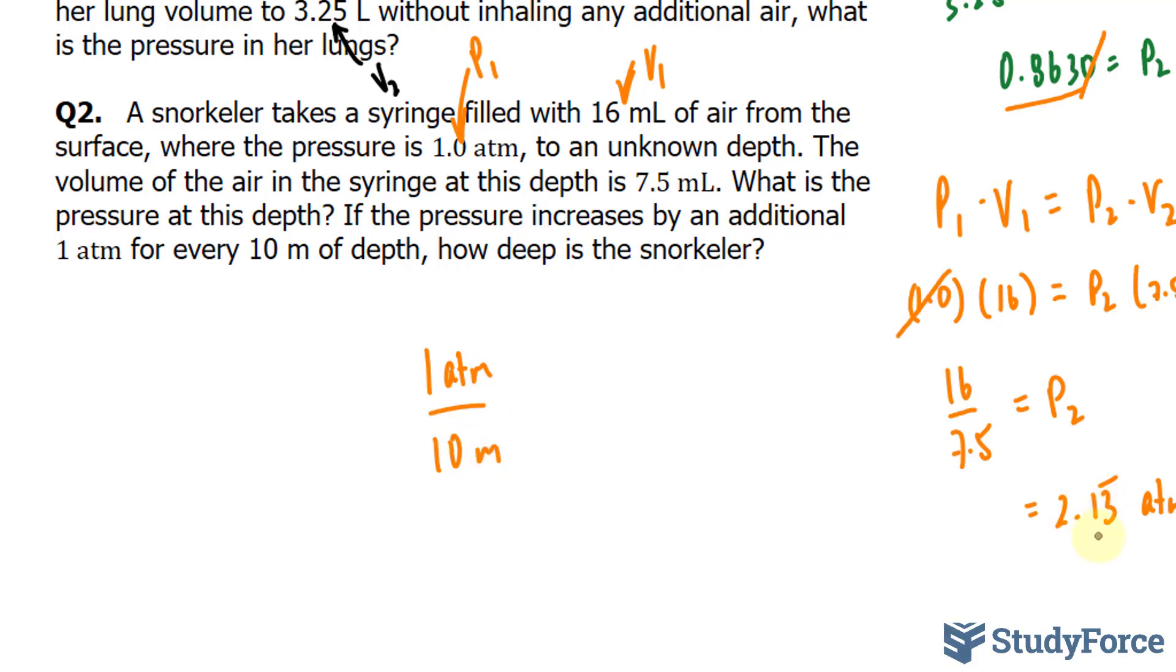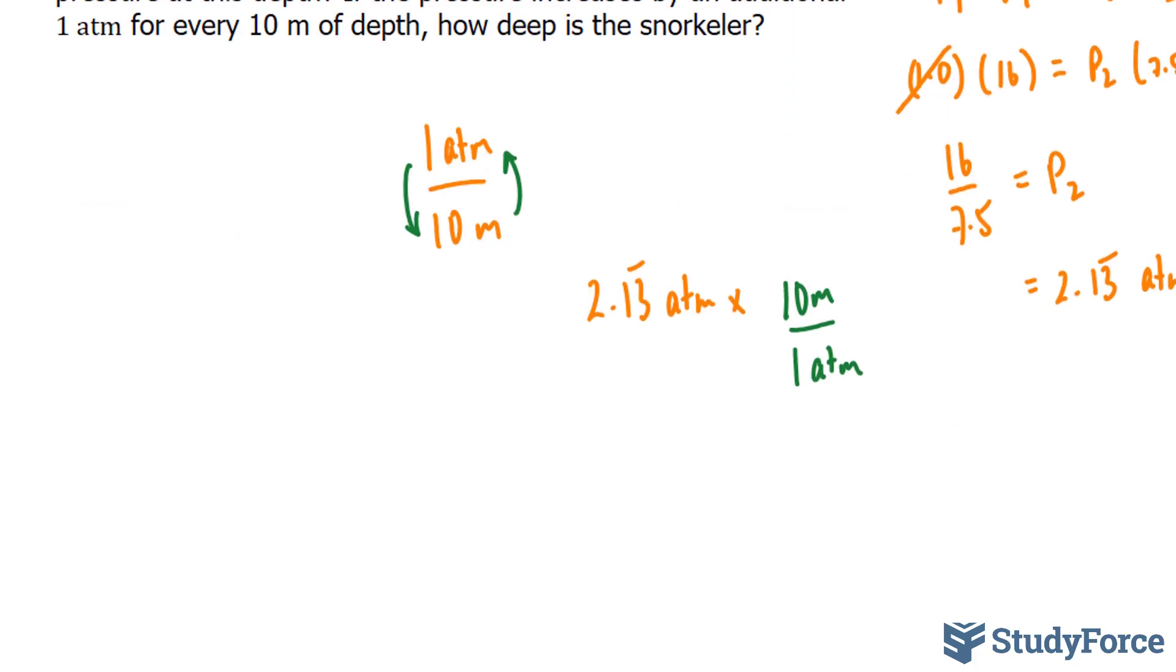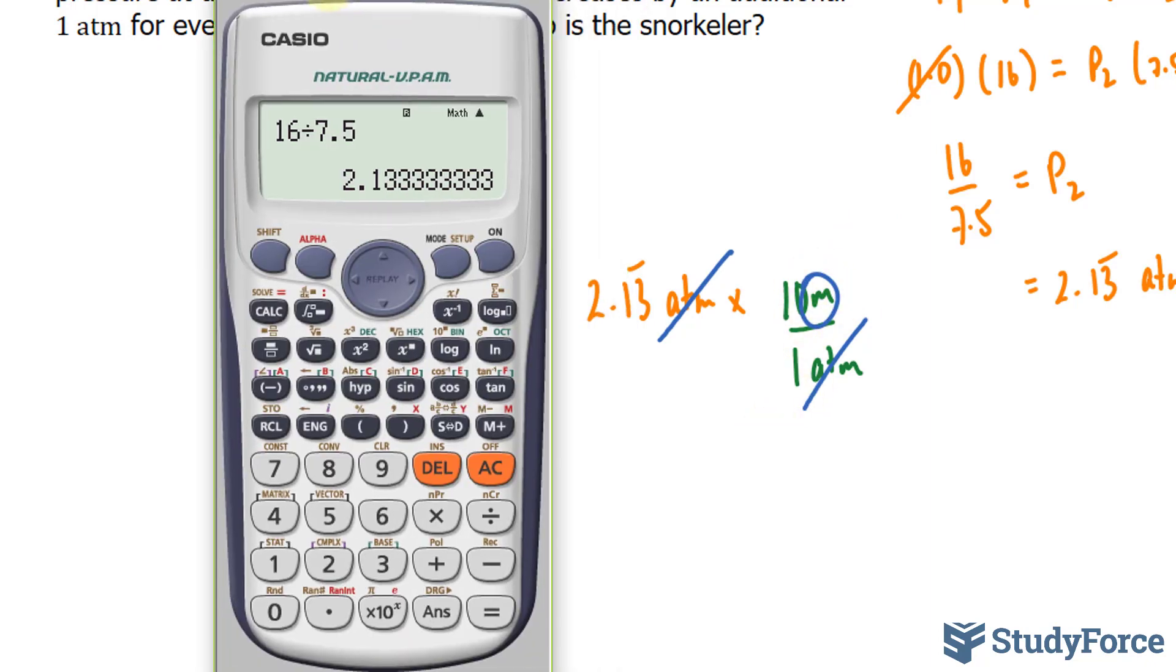What I will do is take this number 2.13 repeating, and I'll multiply it by the flipped version of this rate. Remember, every rate can be flipped, and we learned this a long time ago when we first started learning about conversions. So by flipping this, I end up with 10 meters at the top and 1 atmosphere at the bottom. The reason why I'm doing this is because if you multiply this out, the atmosphere units will cancel out, leaving you with just meters. And eventually this will tell you the depth.